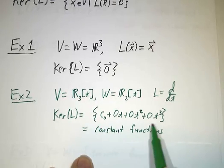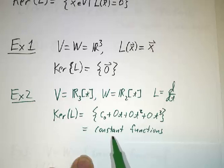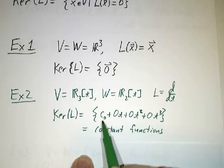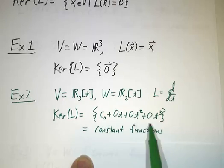In other words, those are the constants. The constant functions have a derivative of zero, and if you're not constant, then your derivative isn't zero. So it's the constant functions, which can be expressed in this way.